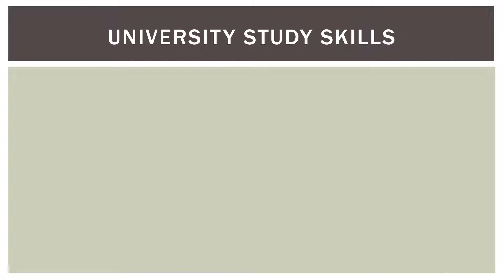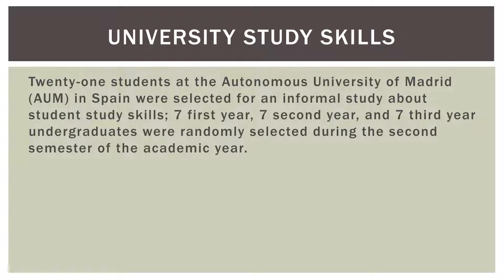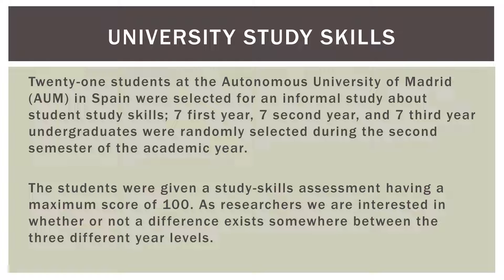As with many of my videos, I like to teach topics through an example. We'll call this the University Study Skills example, and it piggybacks off the example I provide in my ANOVA videos. Twenty-one students at the Autonomous University of Madrid, AUM, in Spain were selected for an informal study about student study skills. Seven first-year, seven second-year, and seven third-year undergraduates were randomly selected during the second semester of the academic year. The students were given a study skills assessment with a maximum score of 100. We are interested in whether a difference exists somewhere between the three different year levels.